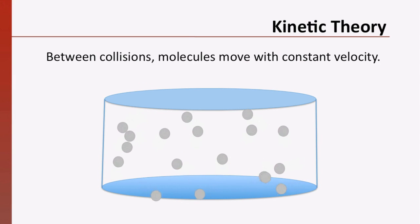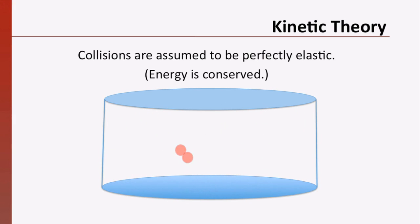Gas molecules that are not in physical contact do not exert forces on one another. So between collisions, they move with constant velocity. Collisions between molecules or between a molecule and the wall of the container are assumed to be perfectly elastic. In other words, energy is conserved.